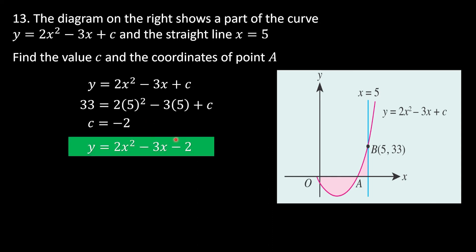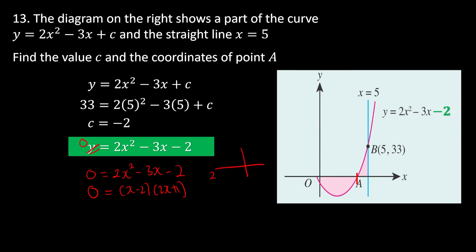The complete equation is y = 2x² - 3x - 2. To find point A (the x-intercept), set y = 0: 2x² - 3x - 2 = 0. Using the cross method to factor gives (x - 2)(2x + 1) = 0, yielding roots x = 2 or x = -1/2.